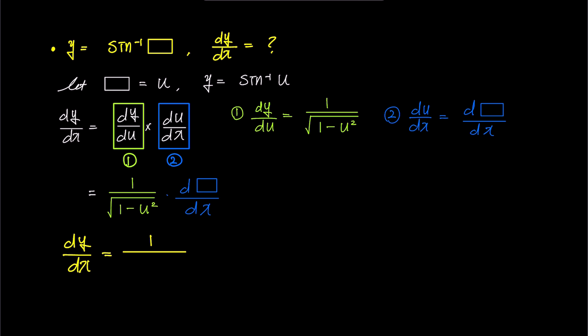This simplifies to box prime over square root 1 minus box squared. Now, we are well prepared to tackle more complex problems quickly and easily.